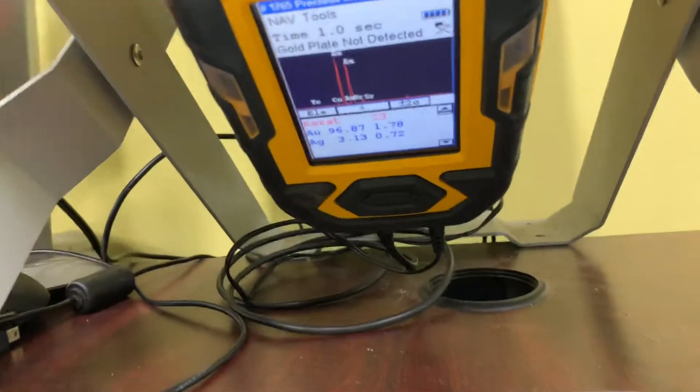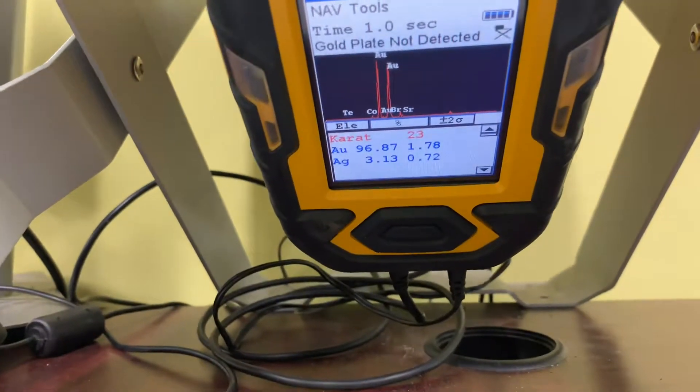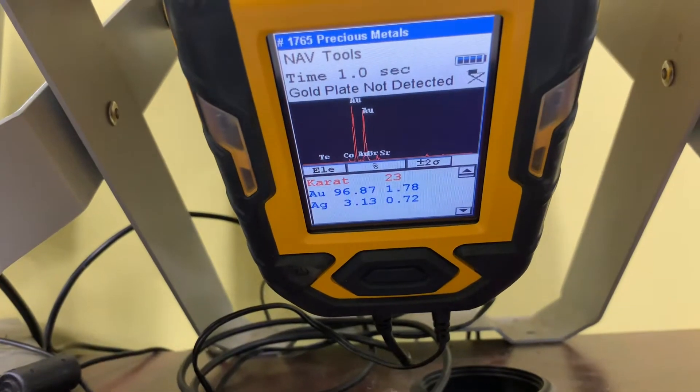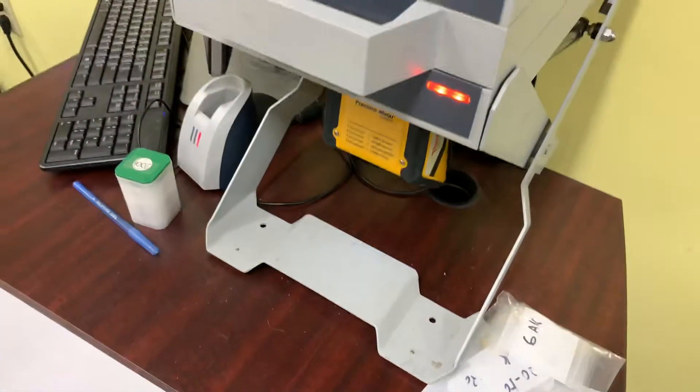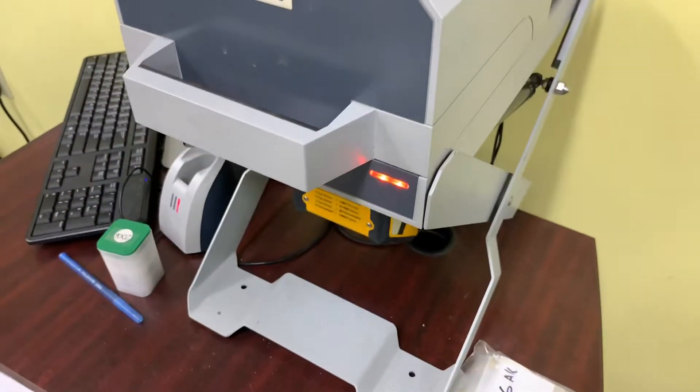23 carat, 96.87. That comes out to be 23 and a quarter carat.